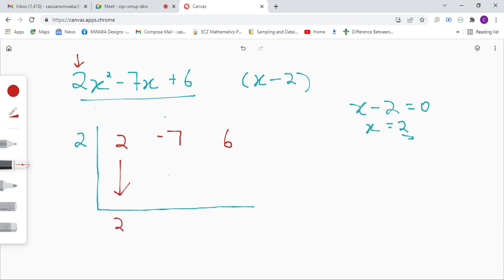Now we're going to say negative 7 plus 4, that is negative 3.